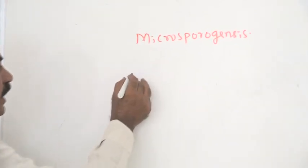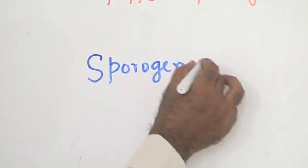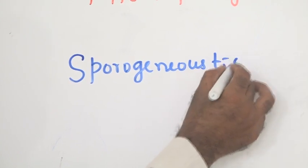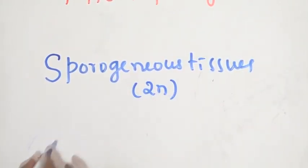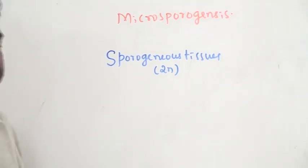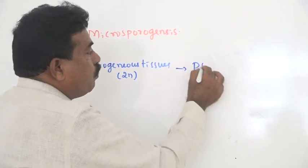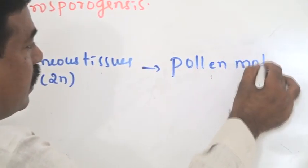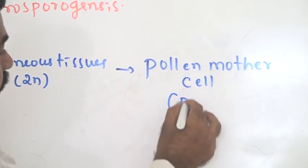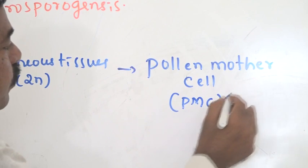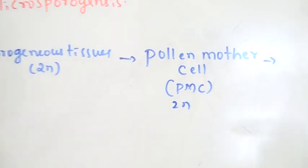If you consider the anther, at the center we have sporogenous tissue. That sporogenous tissue is diploid in nature, meaning it contains two sets of chromosomes. It develops into pollen mother cells, abbreviated PMC. The pollen mother cell is responsible for the formation of microspores.